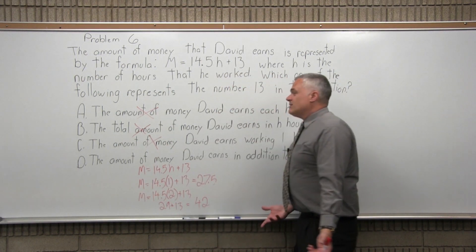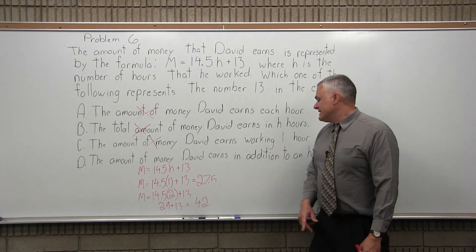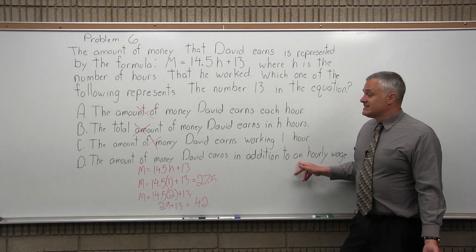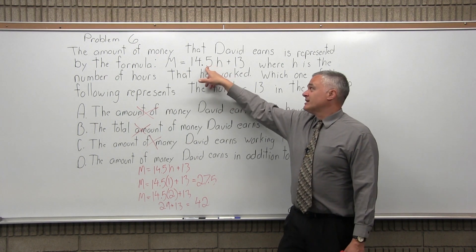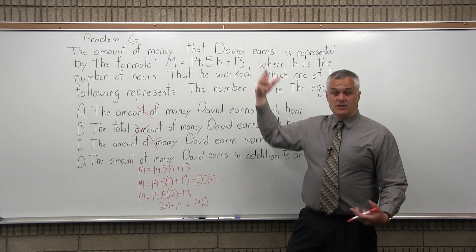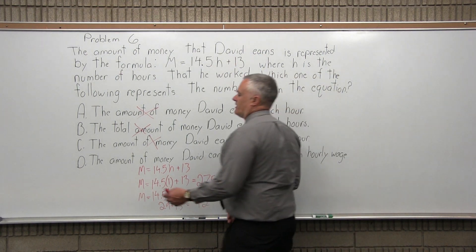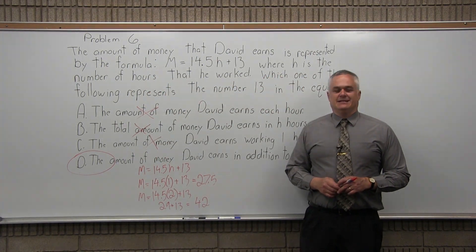It has to be D, process of elimination. D, the amount of money David earns in addition to an hourly wage. That's the one. So you put in the number of hours that he works, multiply it times 14 and a half, whatever the result you get, then you add 13. It's money that he earns in addition to an hourly wage. So the correct answer for question six is option D.